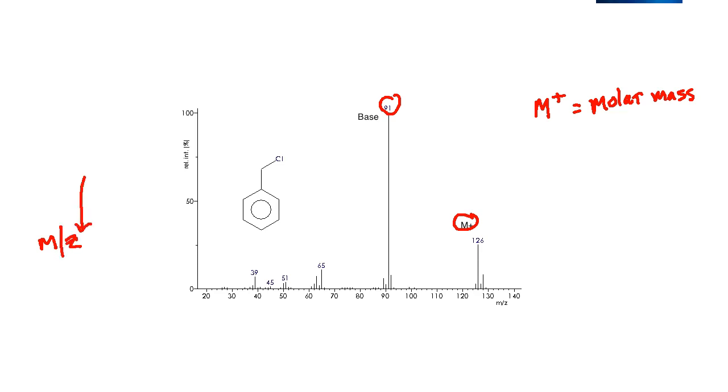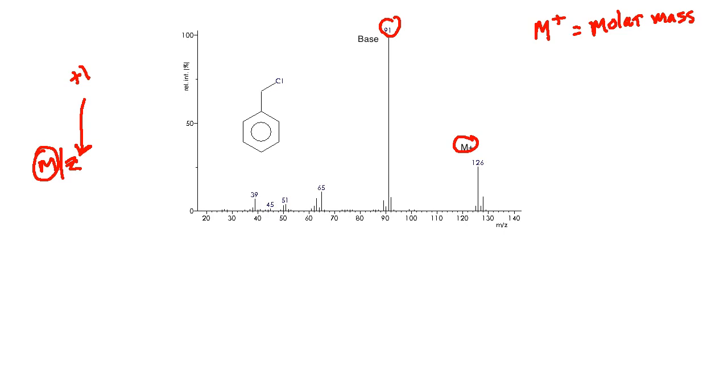When we talk about M/Z, or mass-to-charge ratio, when you form a cation usually you have +1, and so anything divided by one is itself. This means that M/Z is just represented by M, which is the mass.